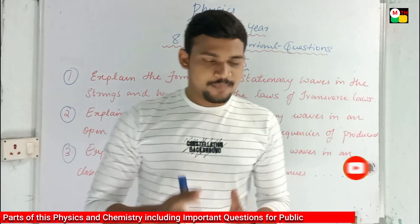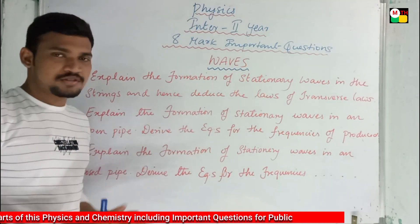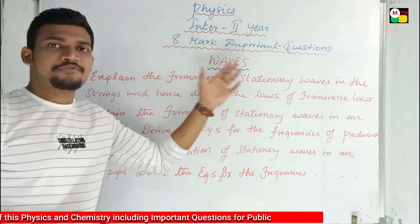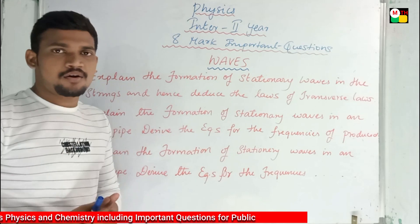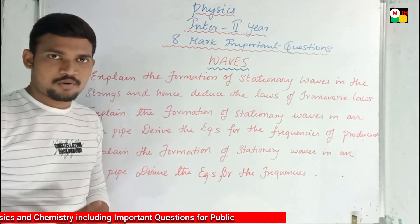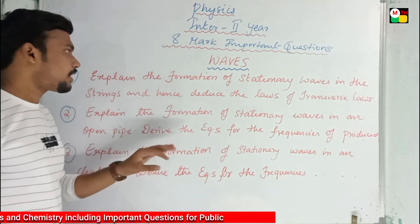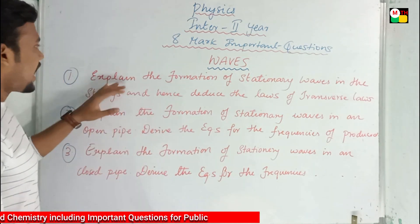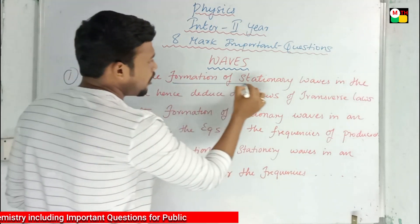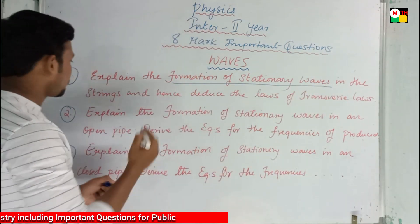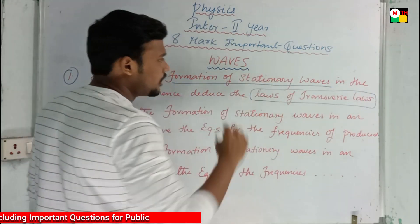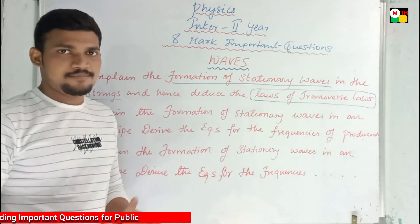I'm going to show what I have written on the board clearly. So we have to go to the first chapter from Physics — we choose the second year, first chapter from the Waves unit. This is an 8-mark question. The question is: 'Explain the formation of stationary waves in a string and hence deduce the laws for transverse waves.'